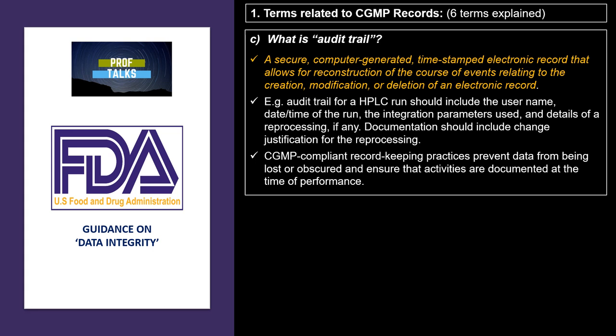The next term explained is audit trail. An audit trail is usually associated with a computerized system and is a secure, computer-generated, time-stamped record which allows complete reconstruction of an event from creation to disposition. An example is the audit trail of an HPLC run, where the username, date and time of the run, integration parameters used, and details of reprocessing if any are all documented. CGMP-compliant record-keeping practices are applicable to the audit trail as well, just as they are to all primary data.